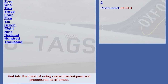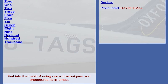Zero. One. Two. Tree. Fower. Fife. Six. Seven. Eight. Niner. Decimal. Hundred. Thousand.